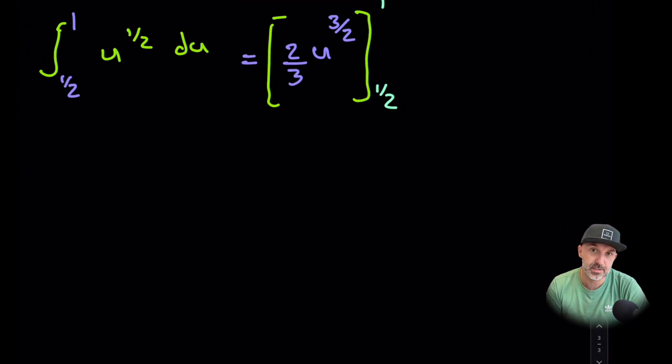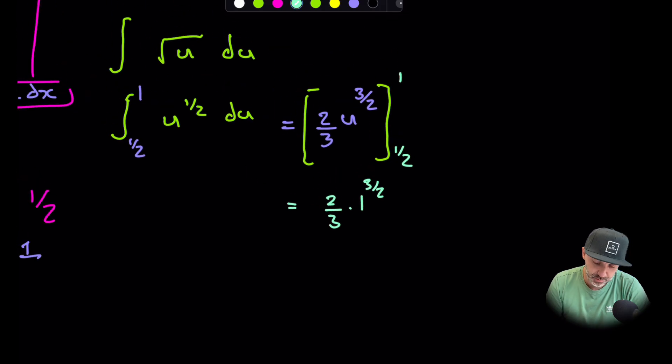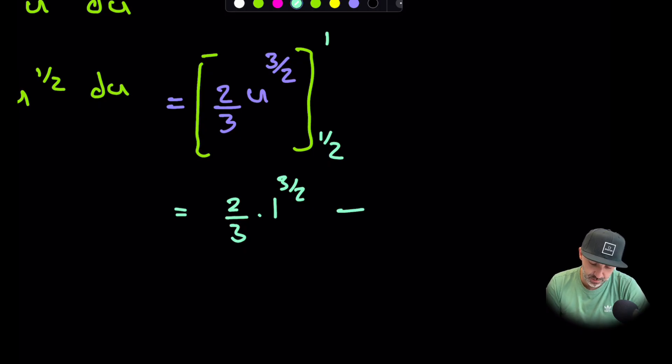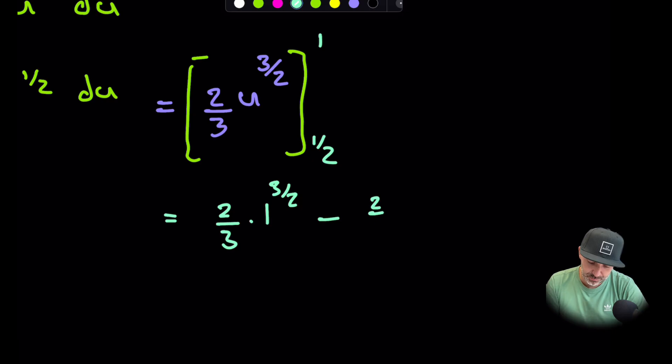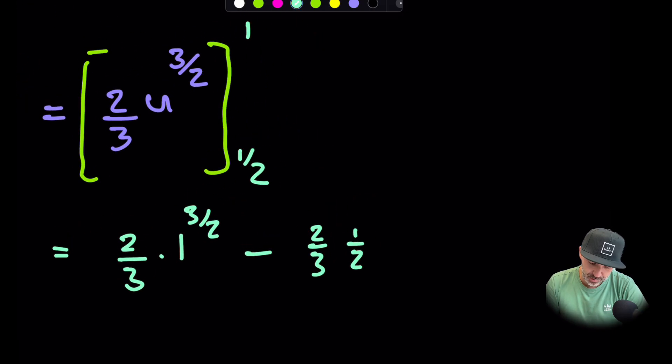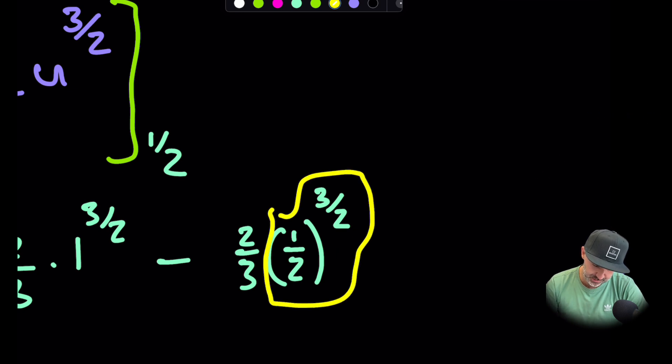Now it's a numerical exercise now just to get this all correct. So when we substitute one into this, we're going to get two thirds times one to the power three over two. Now anything, one to the power of anything is still just one. So I know that's just going to come out to be two thirds, but we also have to subtract. Now I need to plug half into this. So what we're going to do is let's just put two thirds down. And now we need to plug a half into this. So this will be one half, open brackets, close brackets to the power three over two.